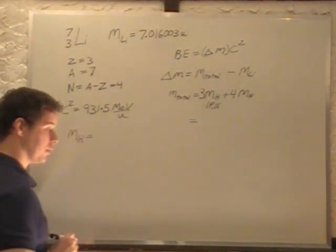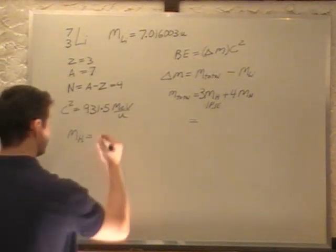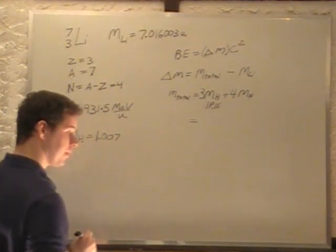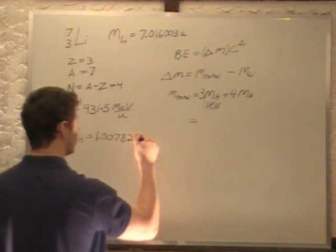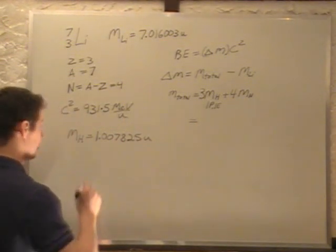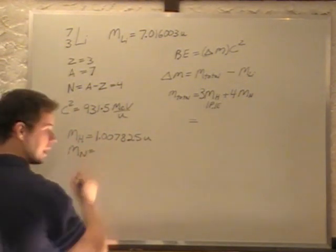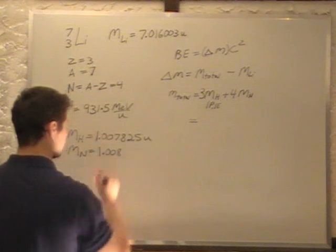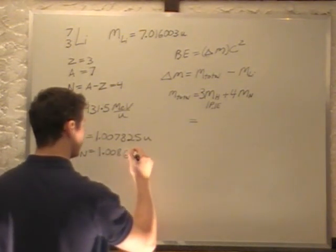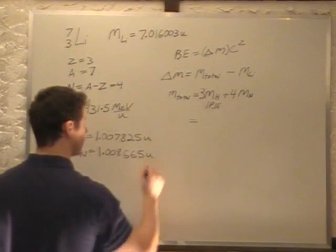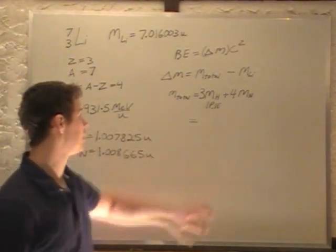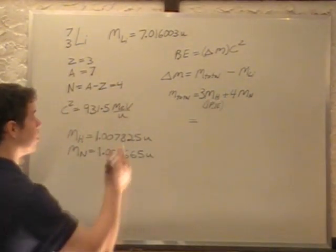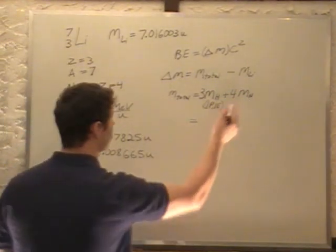I'll write that here. The mass of hydrogen is equal to 1.007825U. Okay, the mass of a neutron is 1.008665U. Okay, those are the numbers that I'm going to use in here. So, total mass is equal to three times the mass of hydrogen, four times the mass of a neutron.